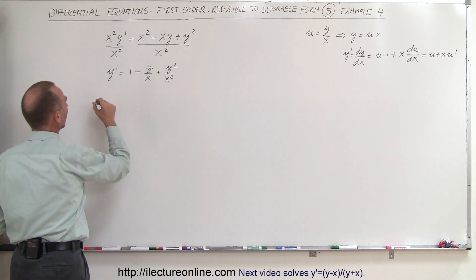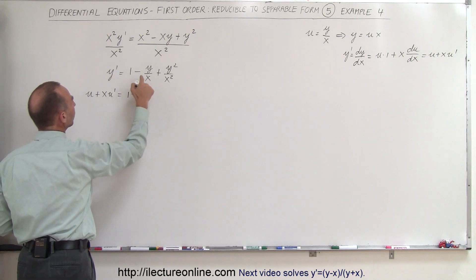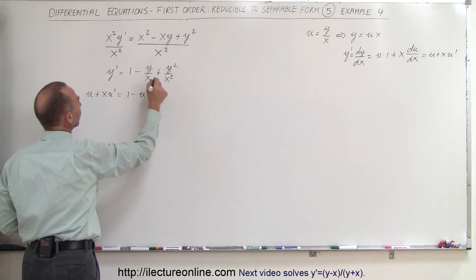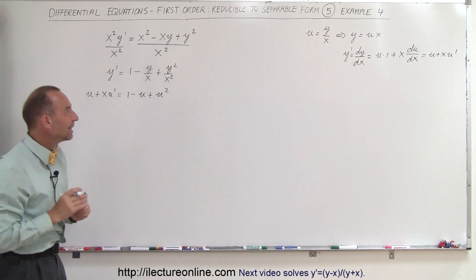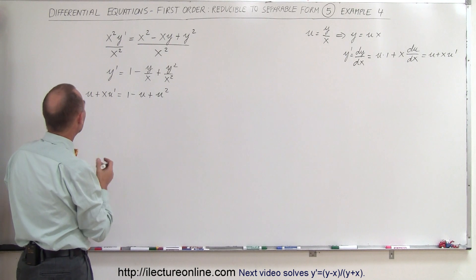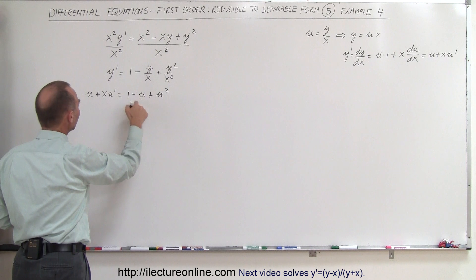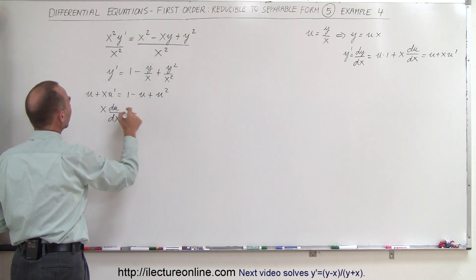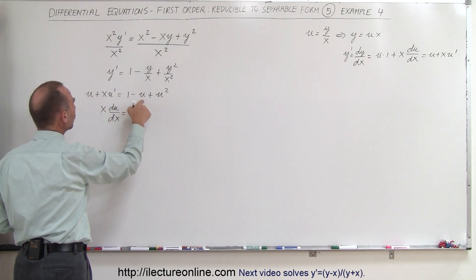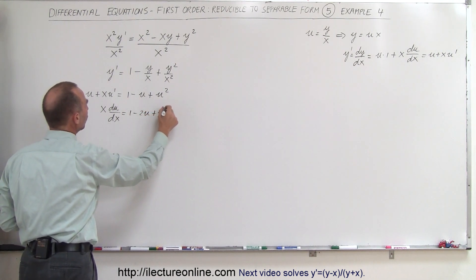If we plug that back in, the left side becomes u plus x times u-prime, equal to 1 minus y/x — which is u — plus y-squared/x-squared — which becomes u-squared. Now we have a situation where we can indeed separate the variables. If we take the u and bring it to the other side, we have x times u-prime equals 1 minus u minus u, which becomes 1 minus 2u plus u-squared.